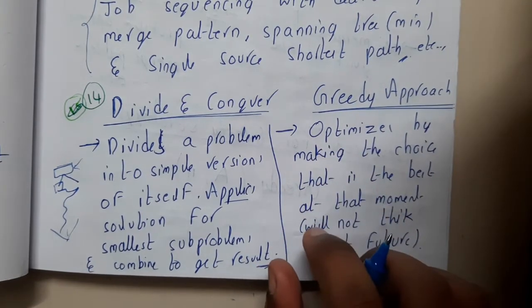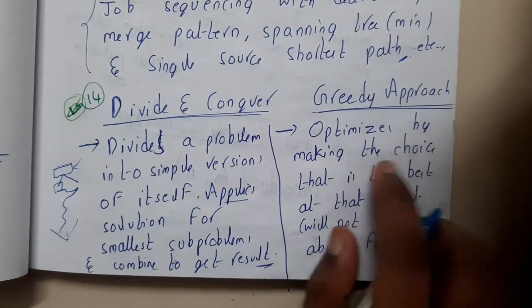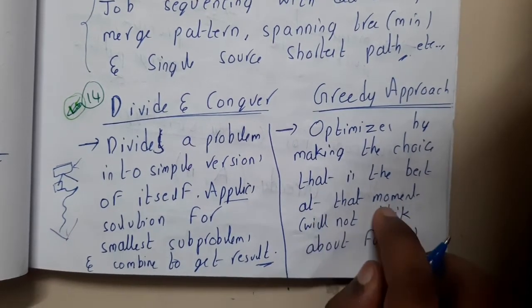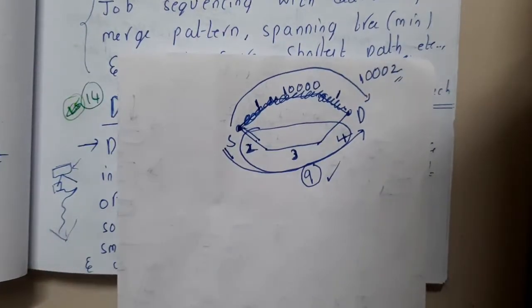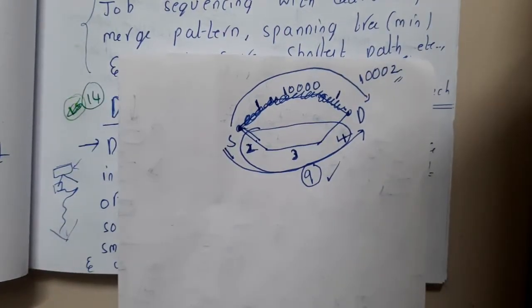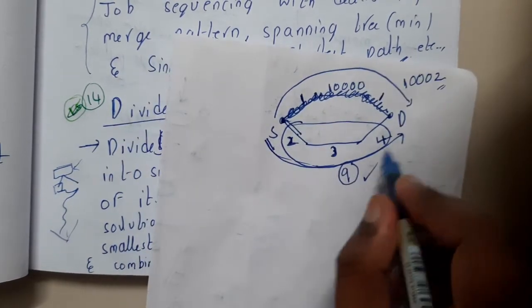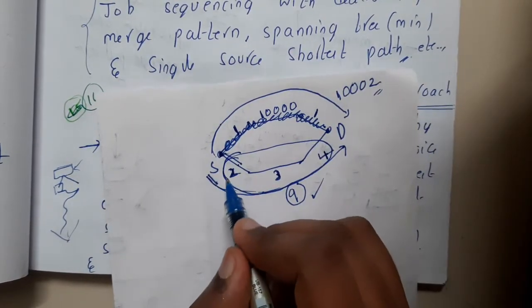Now let us go through the greedy approach. Greedy approach is basically an optimization technique — optimized by making the choices that are best at the moment. In our last lecture I showed you a graph, and I told you to find the shortest path. The greedy algorithm will be deciding this path.